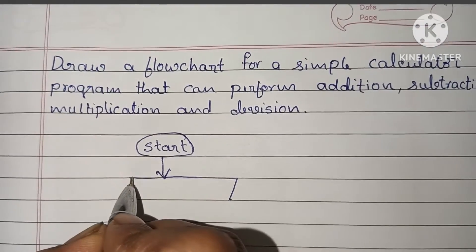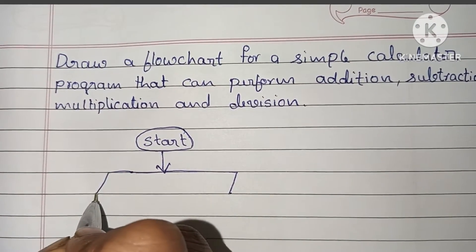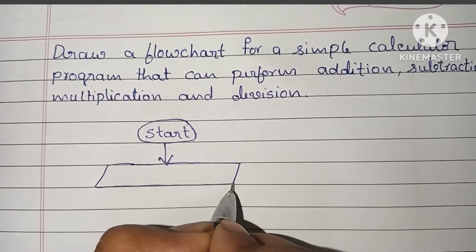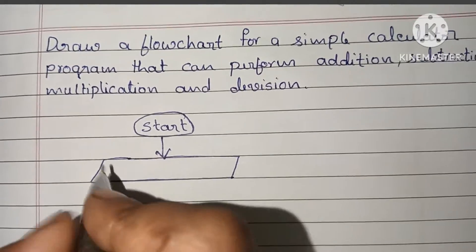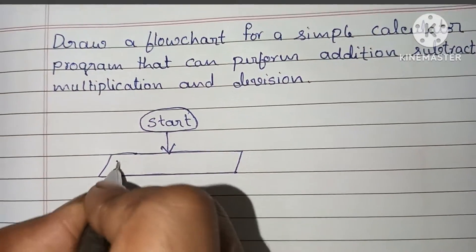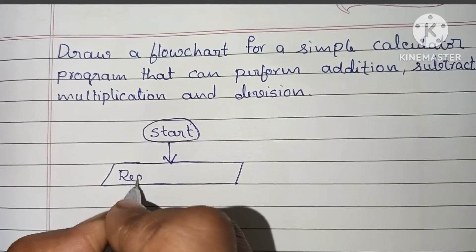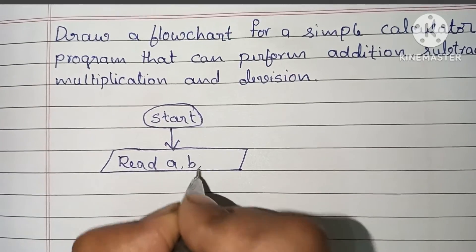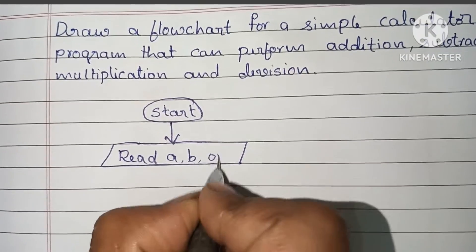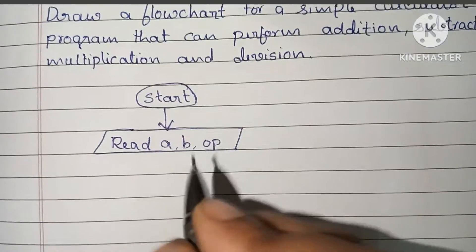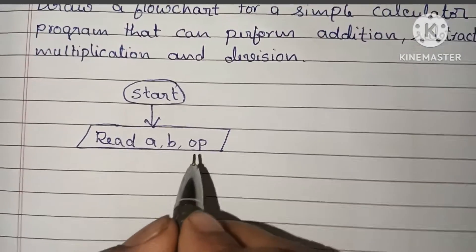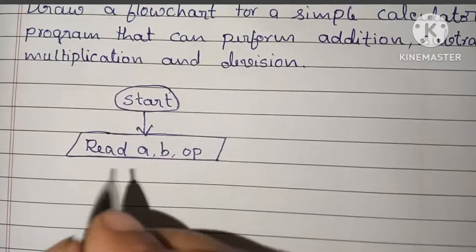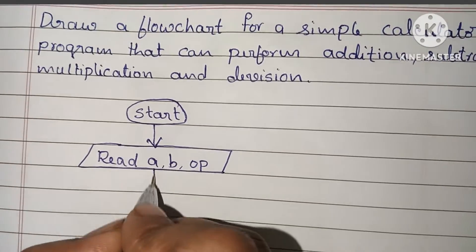Input values are always written within a parallelogram shape, so we have to draw a parallelogram shape. Inside it, we write: read a, b, and which operation we are going to perform, represented by the variable name 'op'.